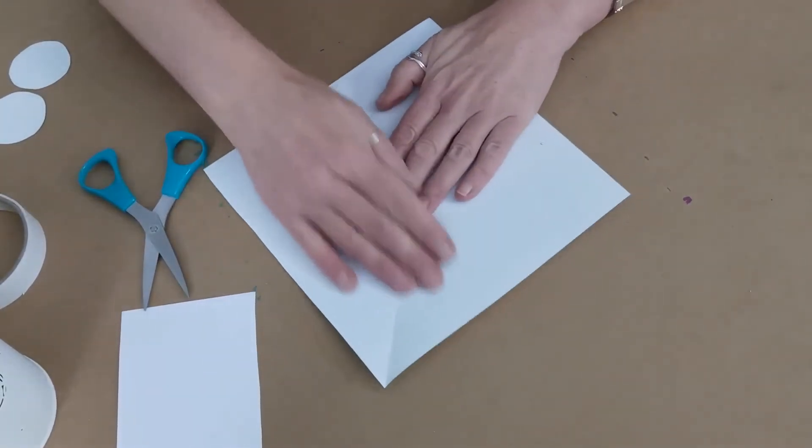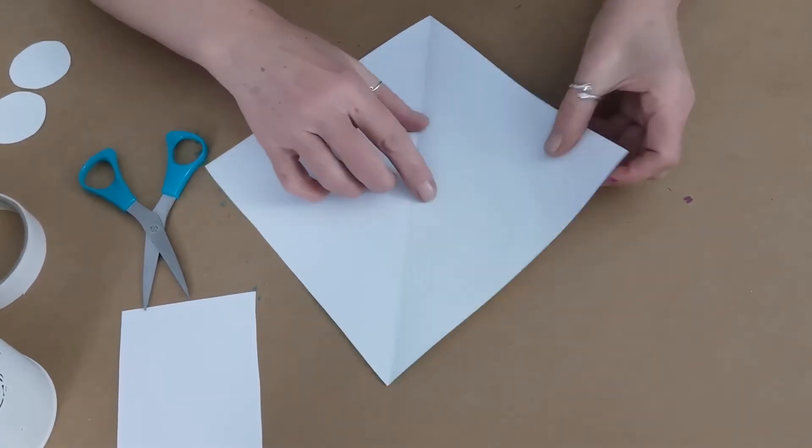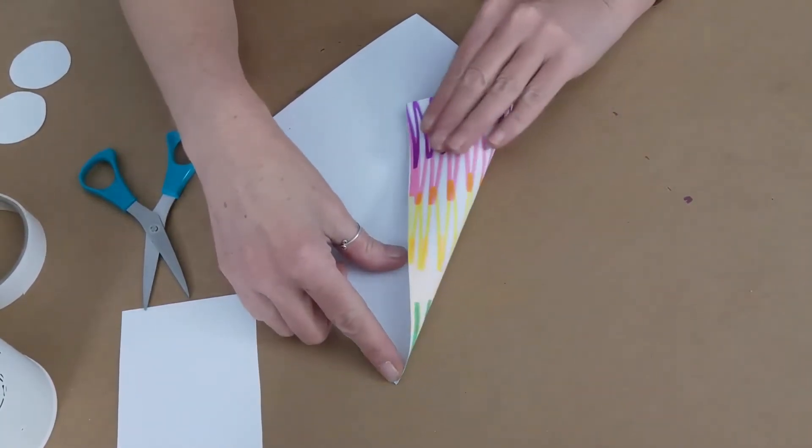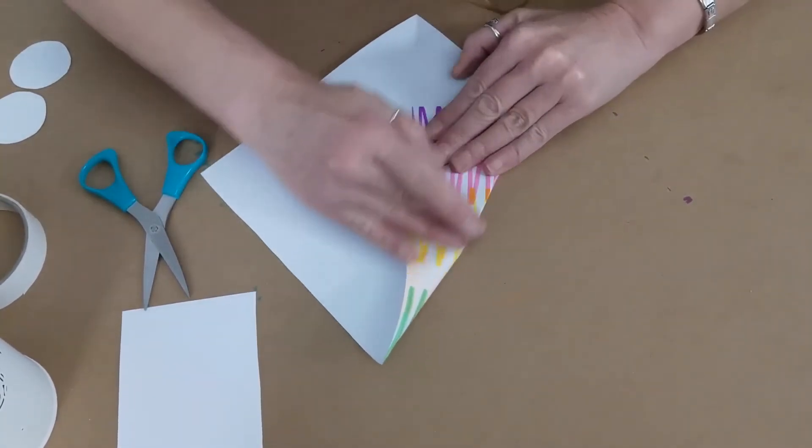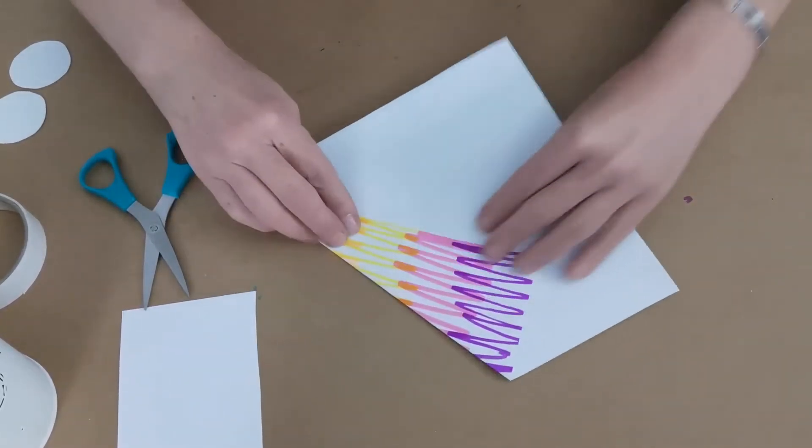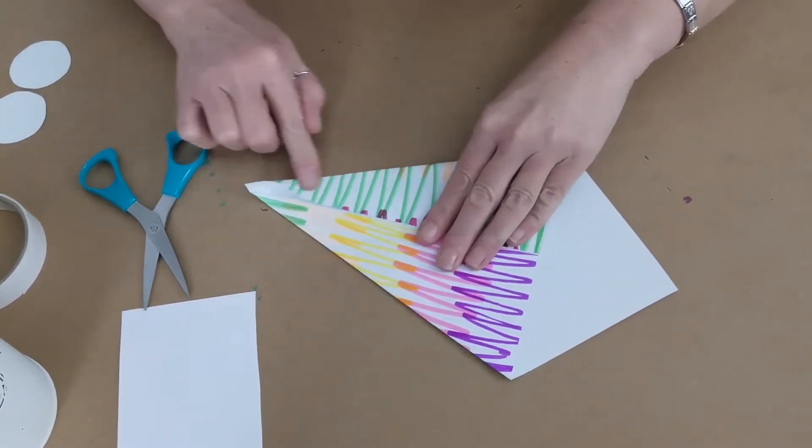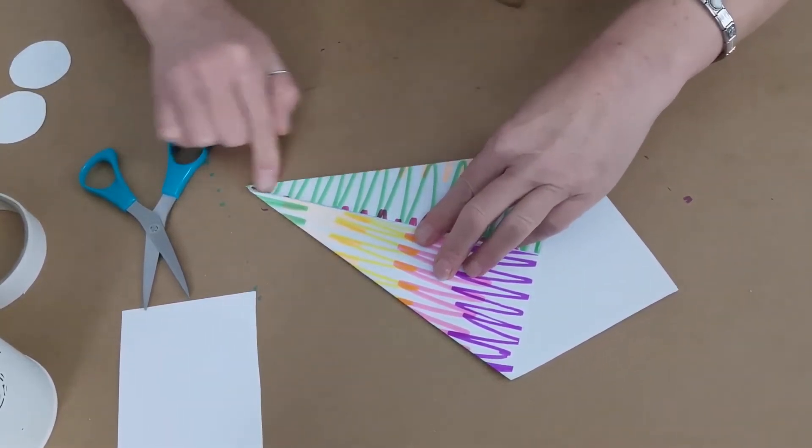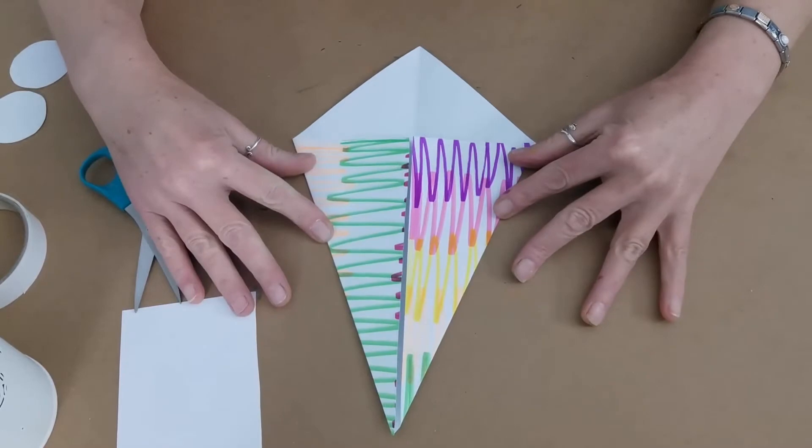We're going to open this up and what we're going to do now is make like a kite shape. So I'm going to take this side and bring it in and fold it into that middle line, and then turn it around and do the same with this other side and fold it into the middle line and then we have this sort of shape here.